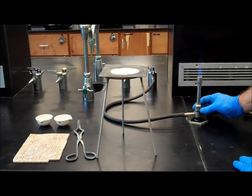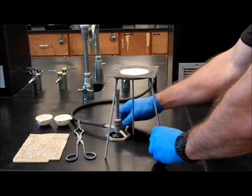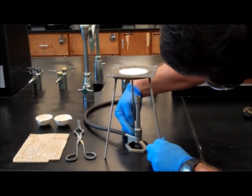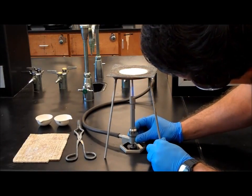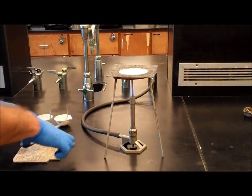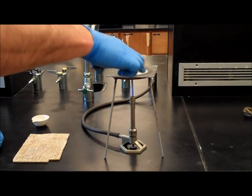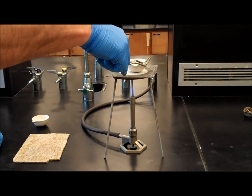Take your Bunsen burner and carefully place it under your tripod. Using your crucible tongs, place one of your crucibles onto your wire brush and center it.